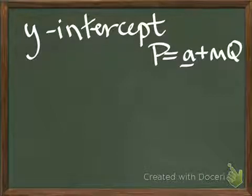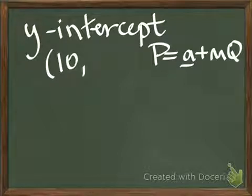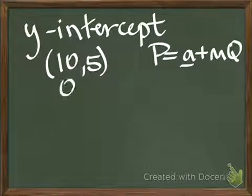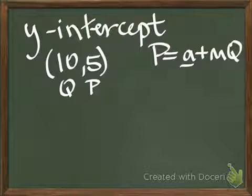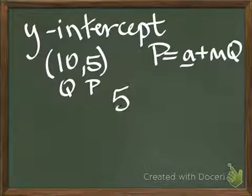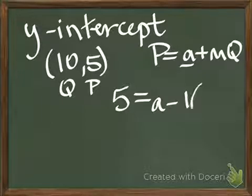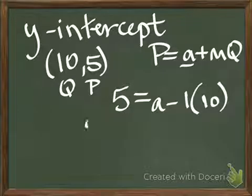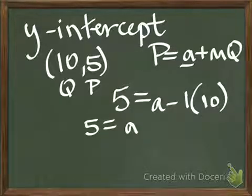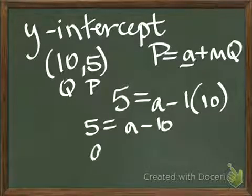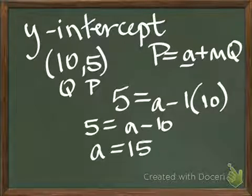I'm going to use the point (10, 5). Again, this is my Q, this is my P. So, plugging that in here, I have 5 equals A. Again, our slope we found to be minus 1 times the quantity of 10. So, we have 5 equals A minus 10, or A, our y-intercept for the demand curve, is 15.